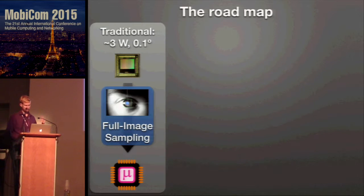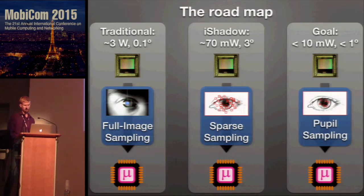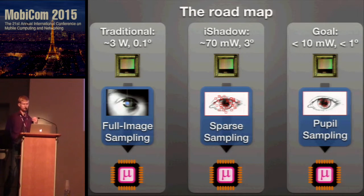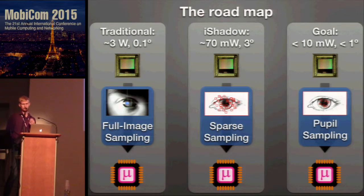To recap: the traditional method uses full image sampling — high power, excellent accuracy. Eyeshadow is orders of magnitude lower power, but also orders of magnitude higher error. Moving forward, we want to bring power below 10 milliwatts and bring accuracy up to levels comparable to industrial trackers. We pursued this by pushing sparse sampling further and focusing on the most salient eye features — those around the iris and pupil — because knowing their position gives you all the information you need.